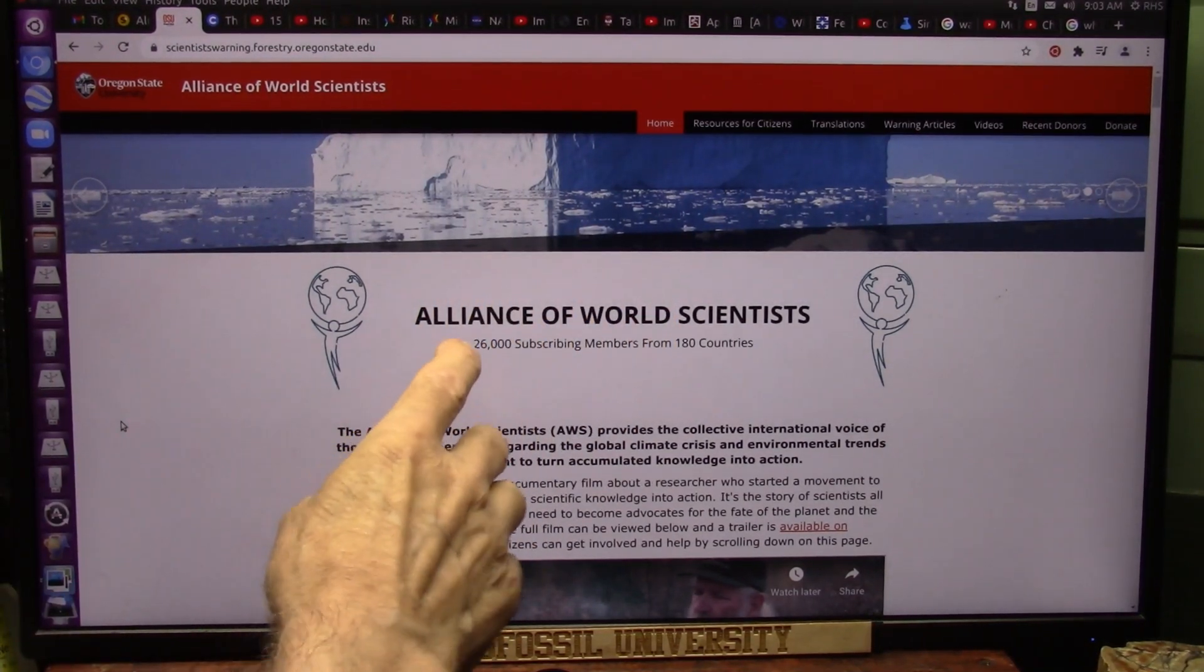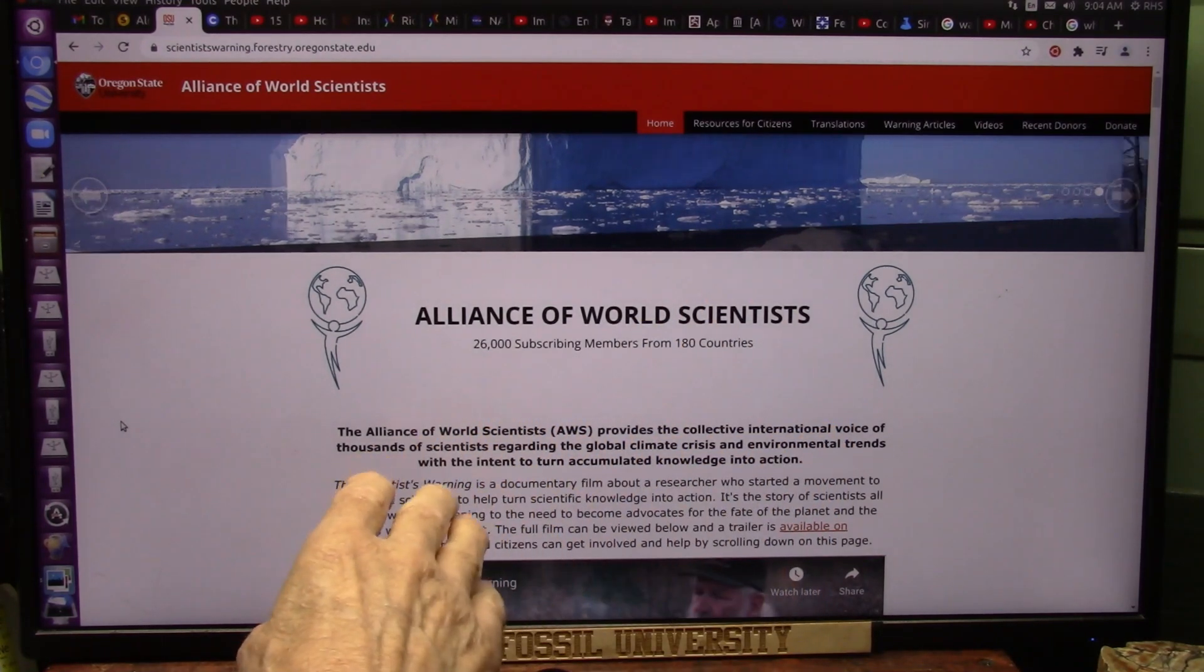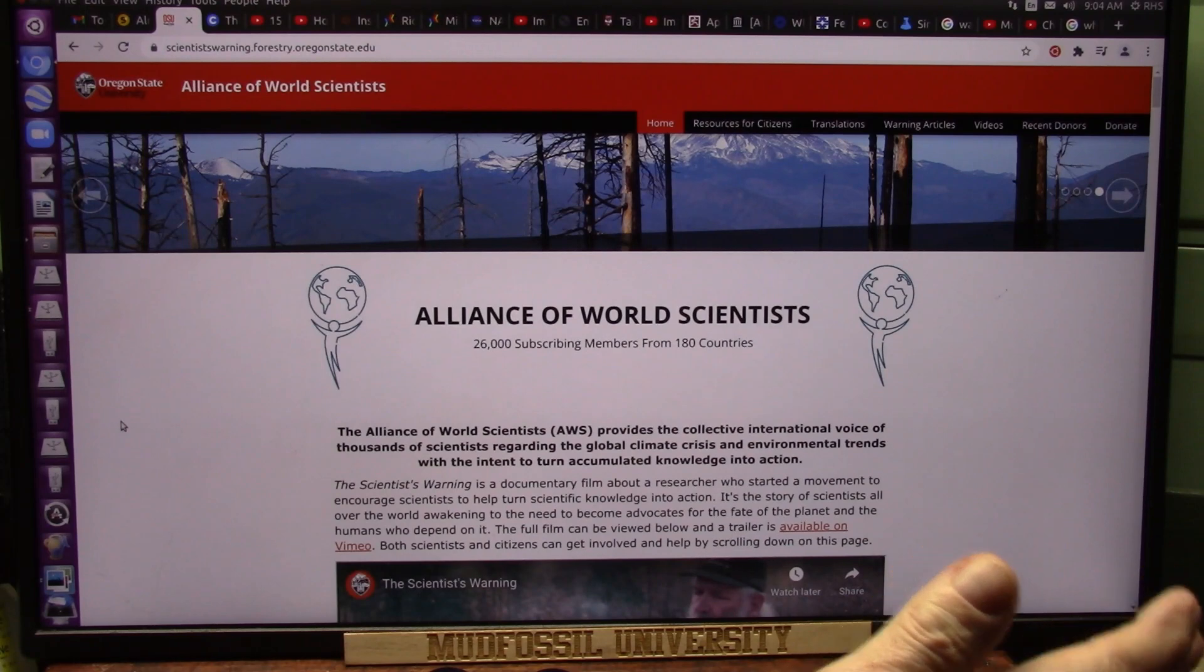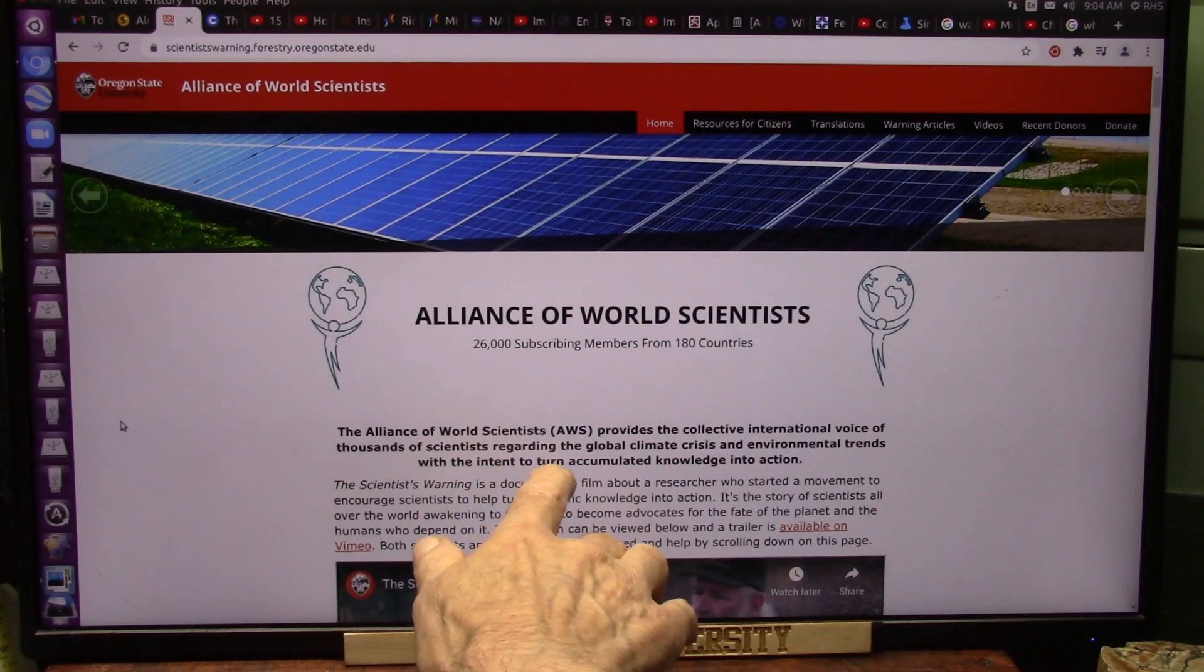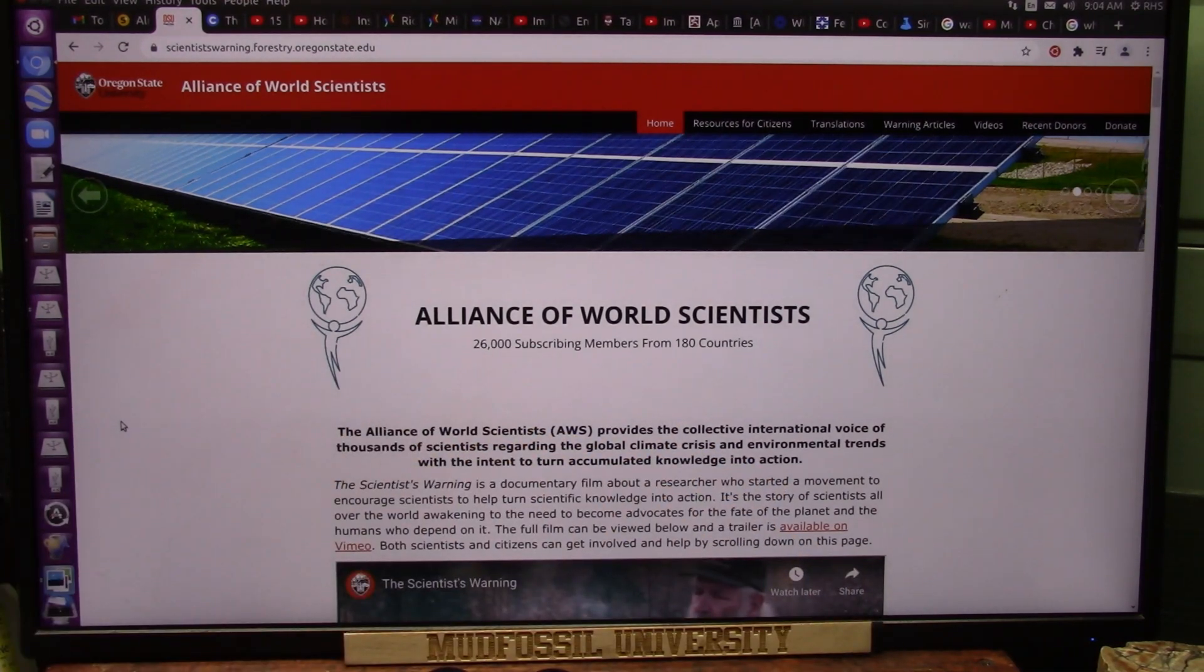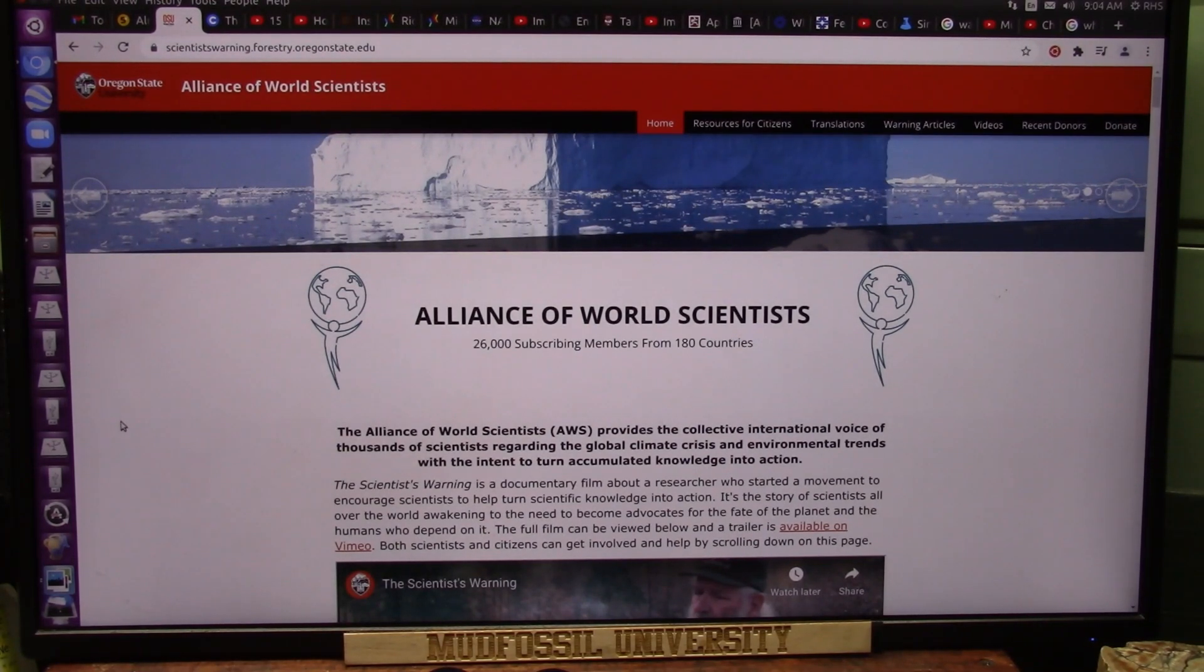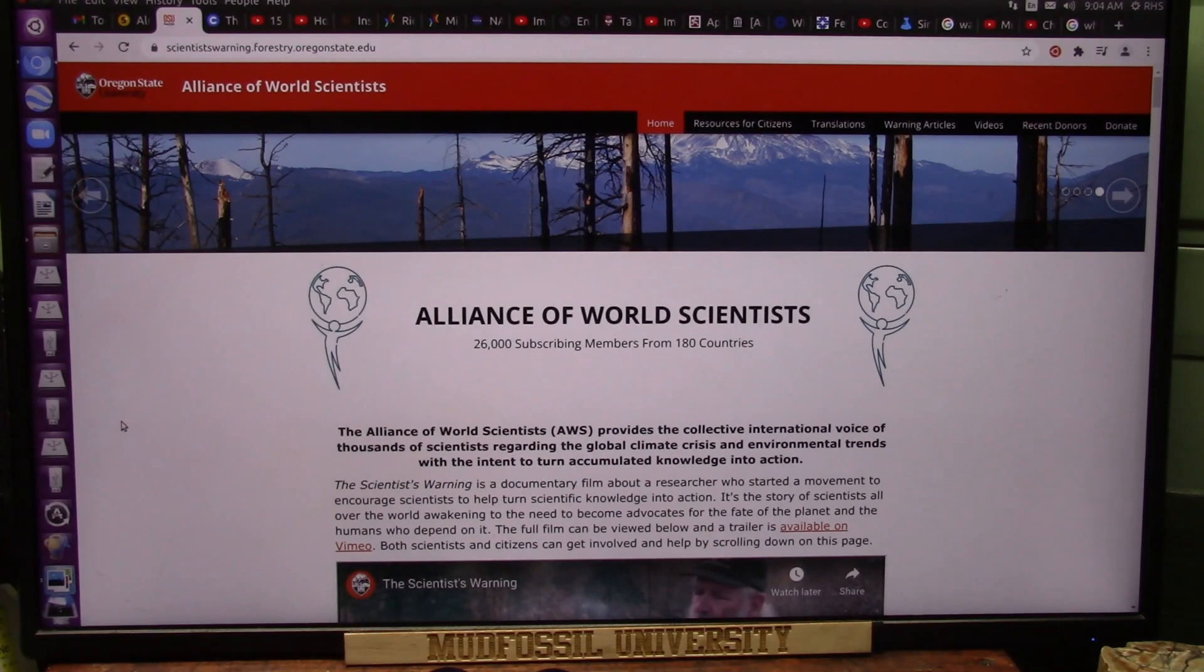This is from an article that just came out today, Alliance of World Scientists, 26,000 subscribing members from 180 countries. It provides a collective international voice of thousands of scientists regarding the global climate crisis, environmental trends, all kinds of problems we're having with the intent to turn accumulated knowledge into action. Unfortunately, I am blockaded from interacting with virtually anybody. I've been put on all kinds of spam lists. People don't correspond with me. I don't know whether I'm getting through them or not because I never get any answers. But I think I have a possible solution to this, but I need to be able to speak to somebody.